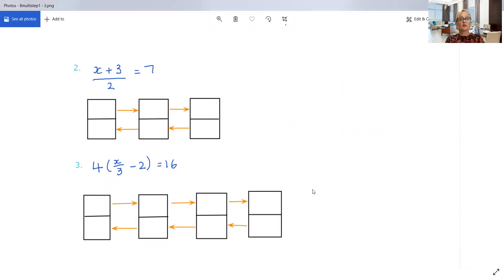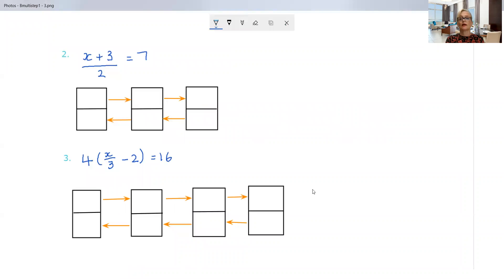Now these ones are even more complicated, but it's okay. It wouldn't matter if 10 things had been done to the x. As long as you follow the order that it's happened and then you go back in the opposite order, you'll be right. Let's do it with the boxes as well as setting it out without the boxes.